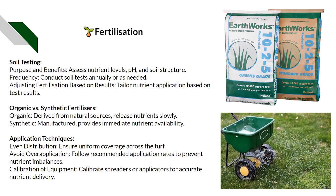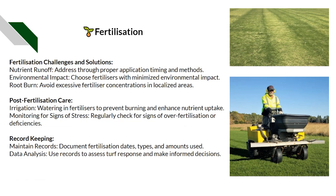We want to avoid over-application by following recommended application rates to prevent nutrient imbalances — something as simple as the wrong spreader setting or too much overlap can cause banding. As shown on screen, the darker green strips indicate double application of fertilizer — you may not notice immediately, but after a couple of weeks the banding becomes visible. Other challenges include nutrient runoff after heavy rainfall, and environmental impact — choosing locally sourced or organic fertilizers where possible to minimize environmental footprint.